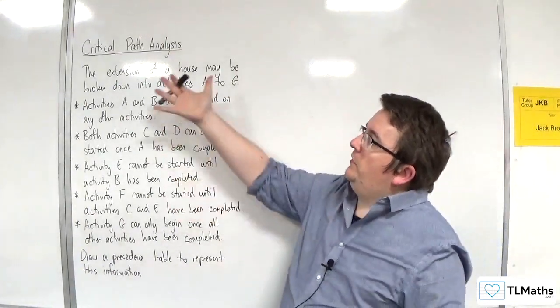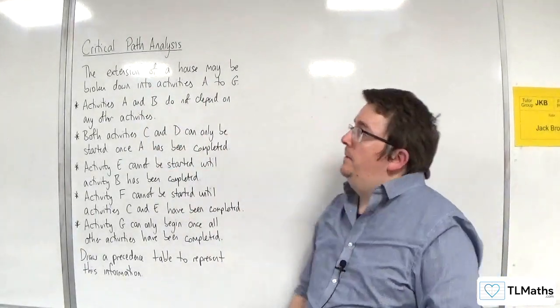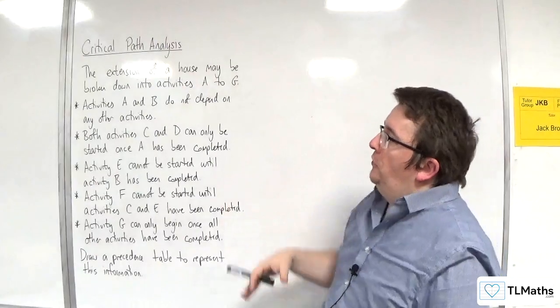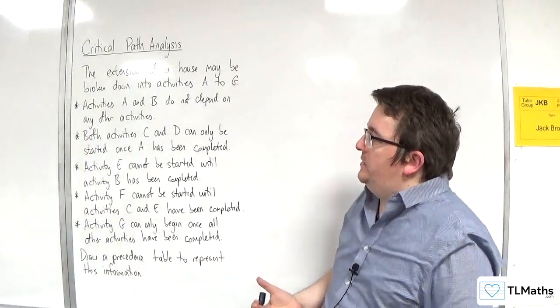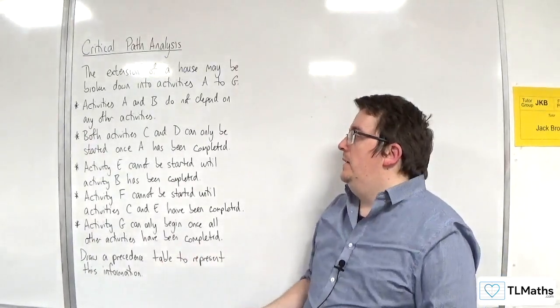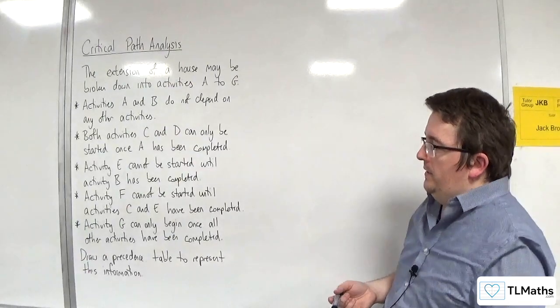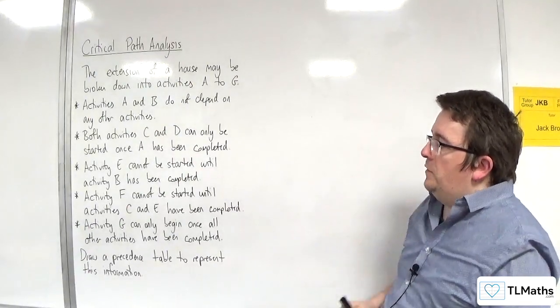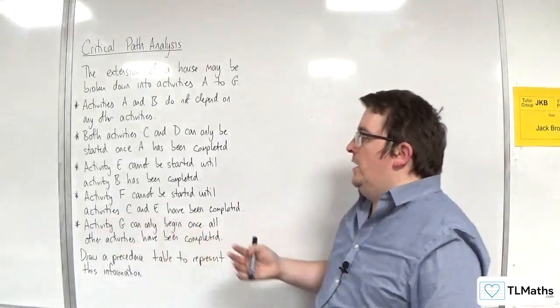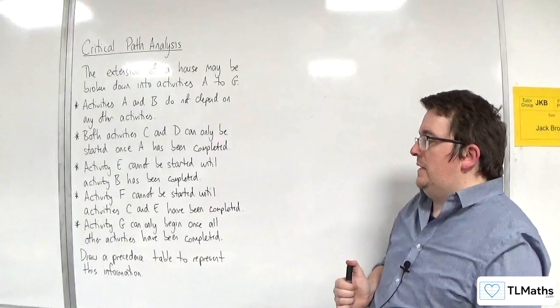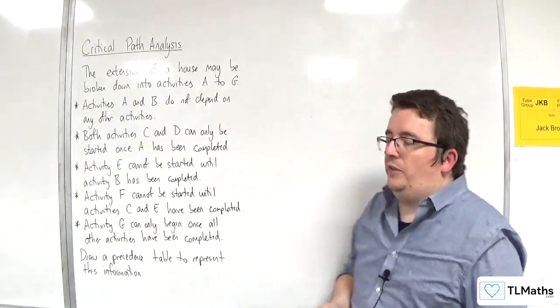In this situation, we've got the extension of a house that may be broken down into activities A to G. Activities A and B do not depend on any other activities. Both activities C and D can only be started once A has been completed. Activity E cannot be started until activity B has been completed. Activity F cannot be started until activities C and E have been completed. And activity G can only begin once all other activities have been completed. Draw a precedence table to represent this information.